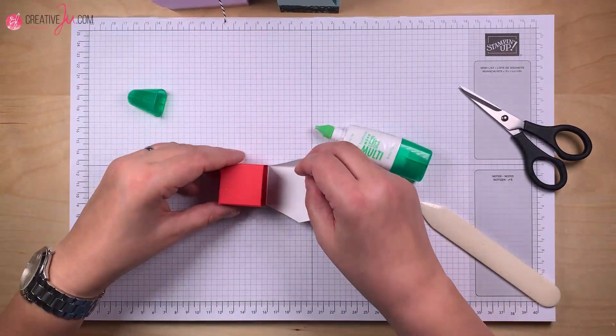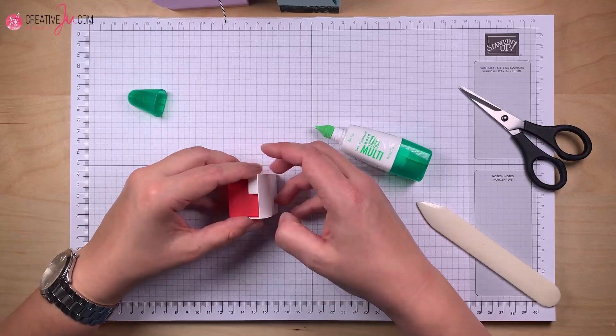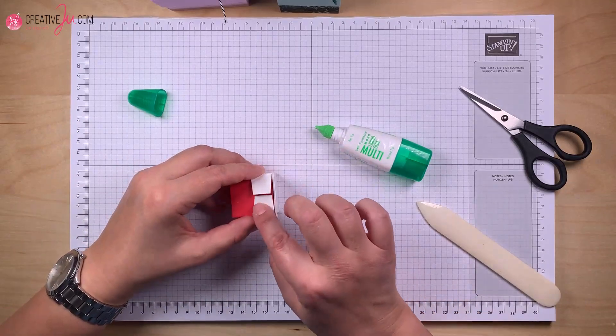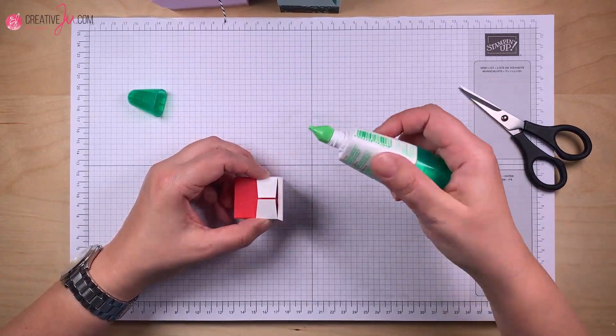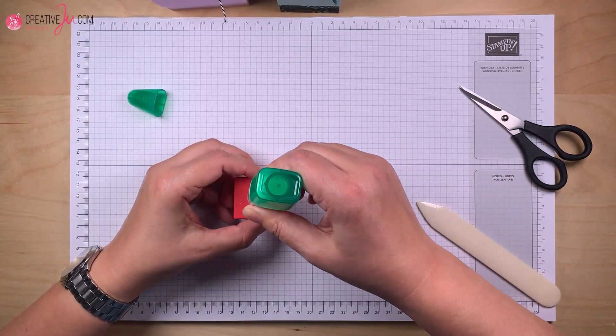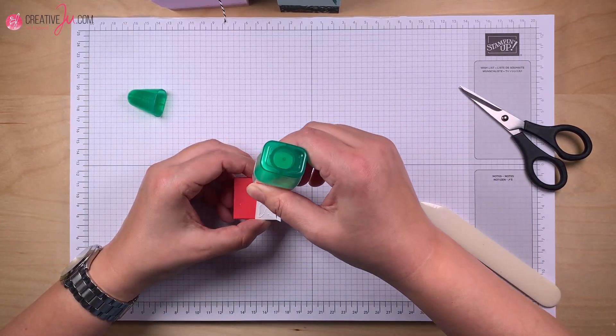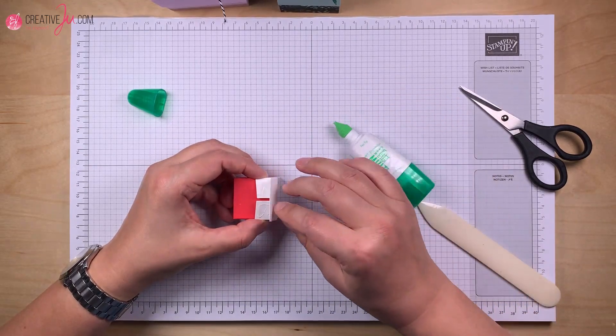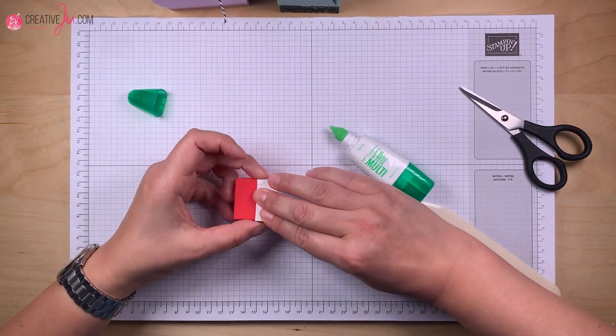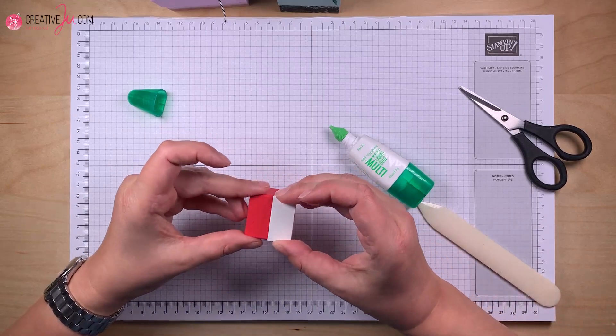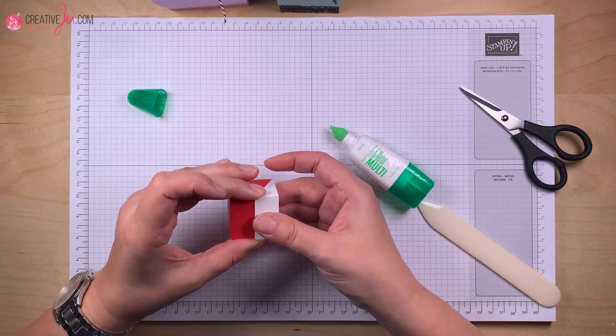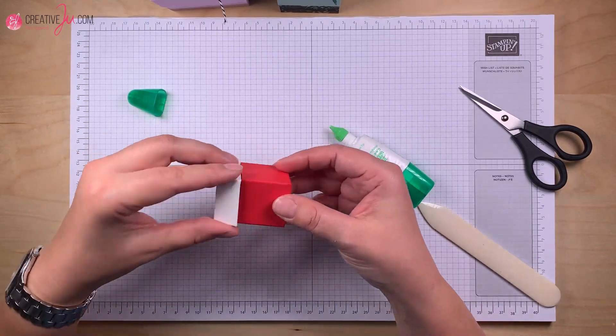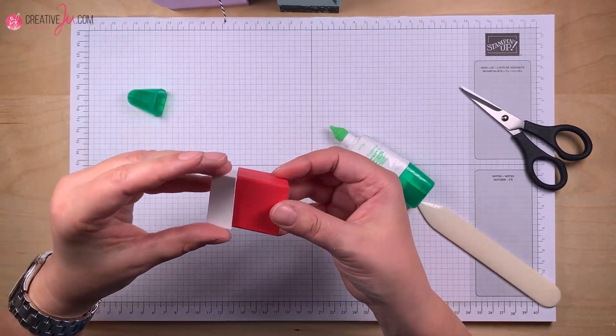Und mit der Seite machen wir das genauso, wir lassen das hier dran, und schieben da so zurecht, wie das eben eng sein soll. Und machen zu, auch das schieben wir kurz nach vorne ein bisschen und hier an den Ecken gerade und dann richtet sich alles aus. Und die Box hat einen perfekten Deckel.